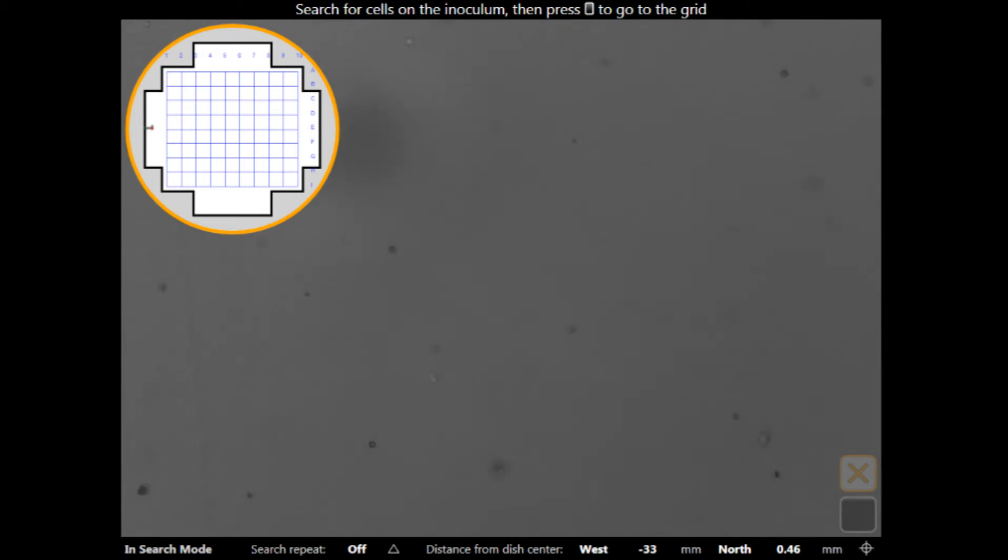Now, what I'm looking for are four spores in a diamond shape or cruciform shape. I can see one there that I think is quite nice.